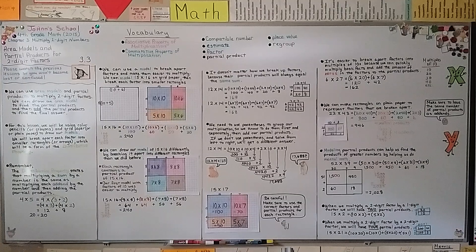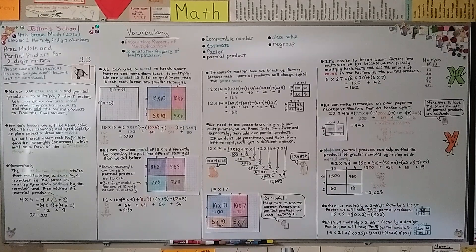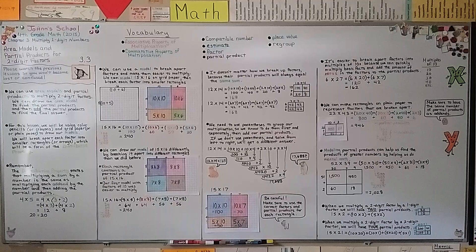In our next lesson, 3.4, we're going to multiply with place value and partial products to multiply 2-digit numbers by 2-digit numbers. I hope I'll see you there. Have a wonderful day. Bye!